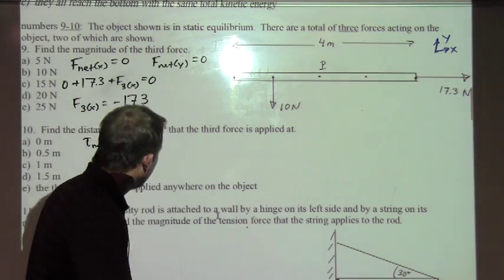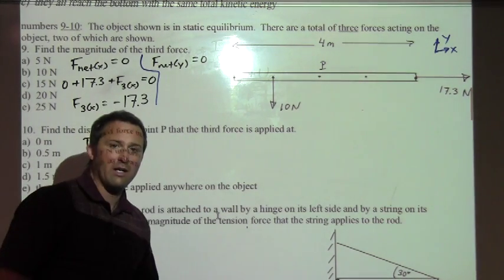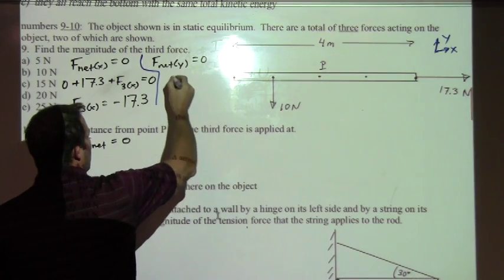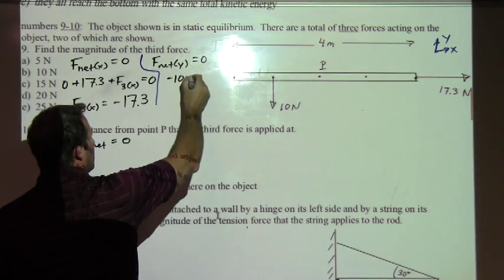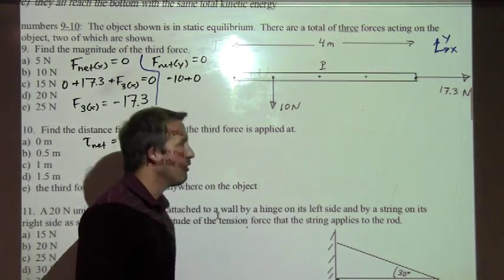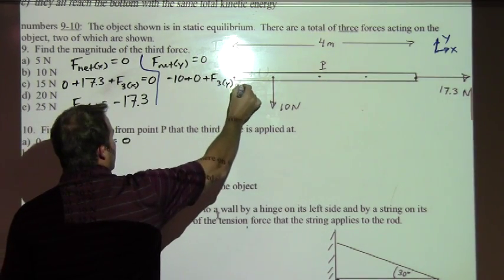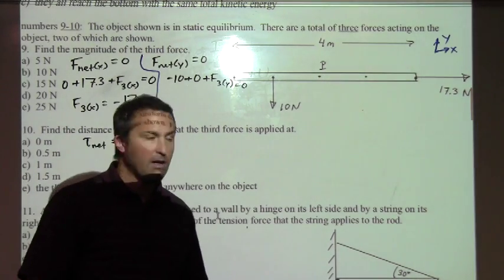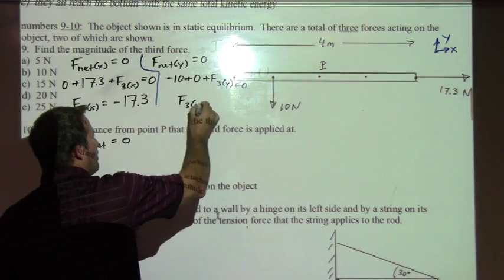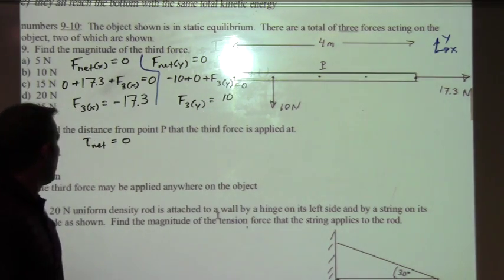We're not at the answer yet, but that's going to be helpful. Now we move on to our next tool, which is the net force in the y direction equals zero. This one is relatively easy for us. This has zero y component, and then we need to consider that the third force may have a y component, and it does. When we solve for it, we get positive 10 newtons.